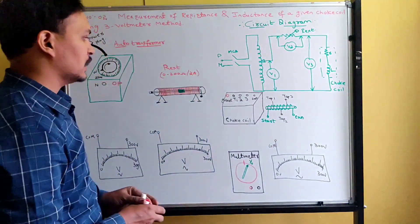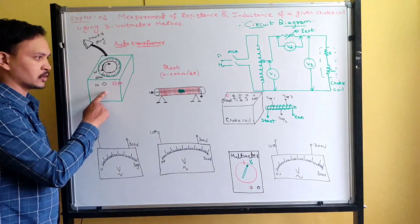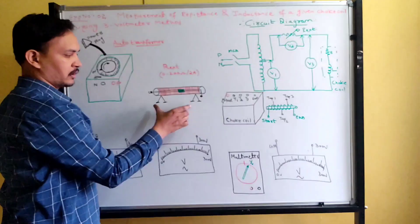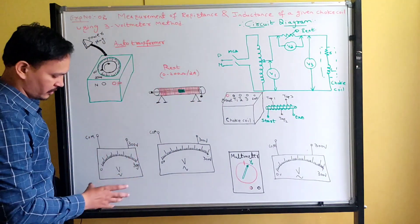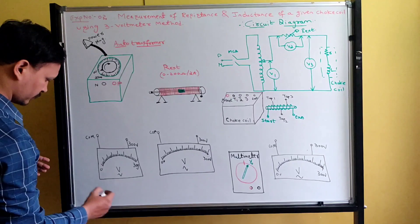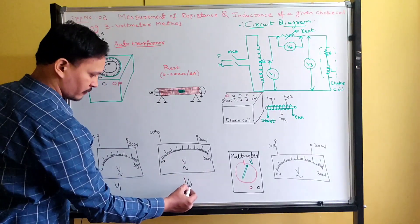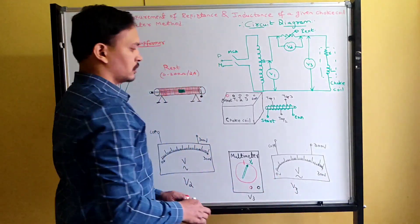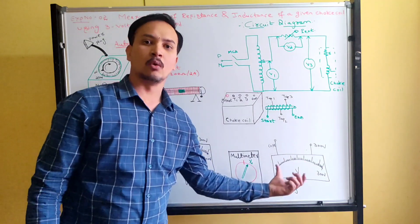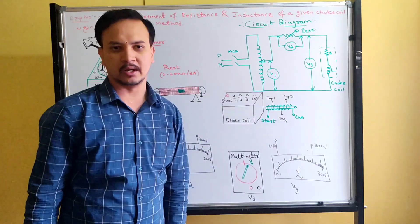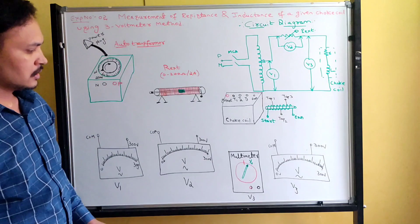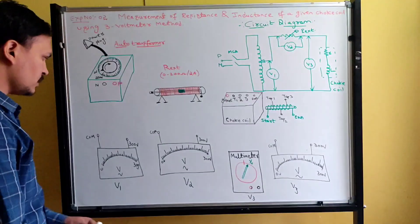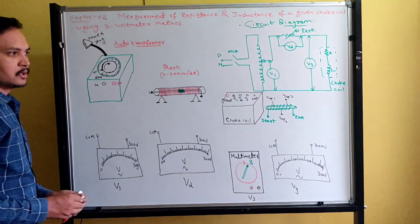I have taken the auto transformer, choke coil, external rheostat, and voltmeters. V1, V2, and V3 — you can use either a multimeter or another voltmeter, whichever is available. In the laboratory we use a multimeter, so use the multimeter only. Now let's do the connections according to the circuit diagram.